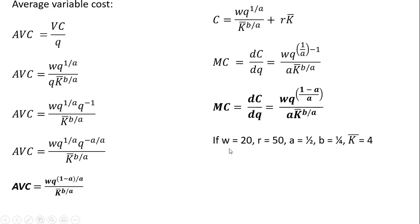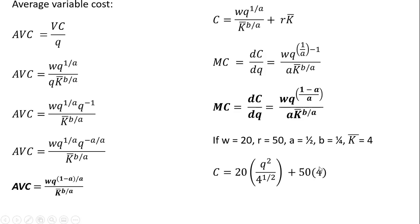If we want, we could substitute specific values in for the wage, the price of capital, the exponents on labor and capital, and use a fixed level of K bar. Plugging these values in and simplifying, we get the cost equation. I hope you found this video helpful.